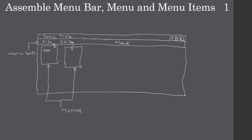Inside the File menu we may contain one or more menu items — for example, New, Open, Exit, as well as Copy and Paste. These are all called menu items. So that's the relation: a frame window contains a menu bar, the menu bar contains one or more menus such as File menu and Edit menu, and there is also an About menu. A menu contains one or more menu items — for example, Copy and Paste are the menu items.